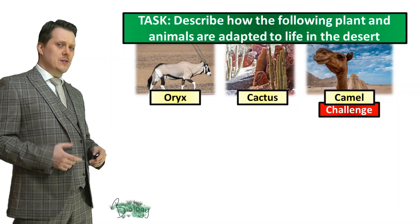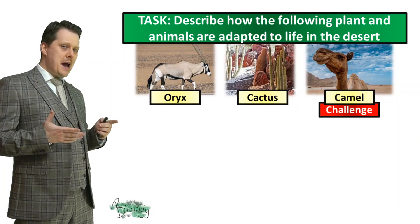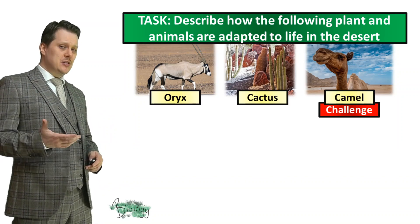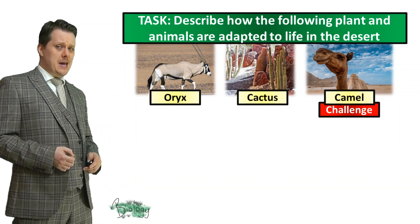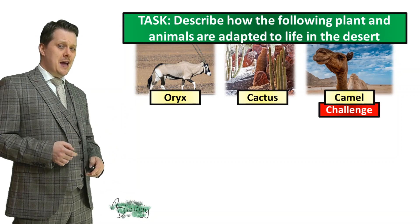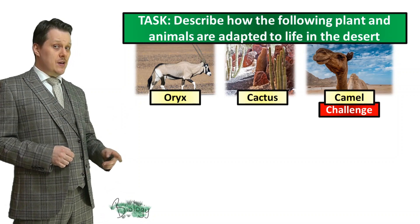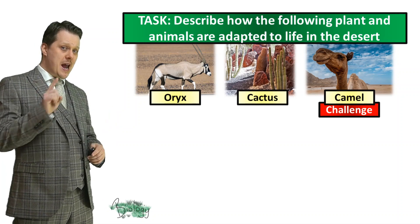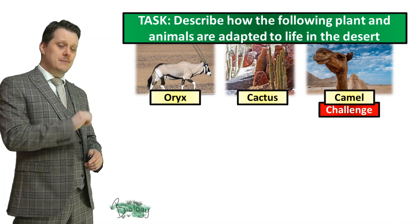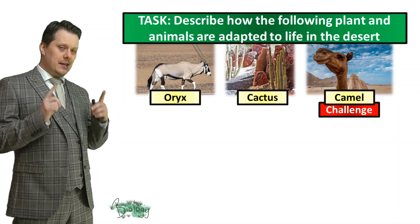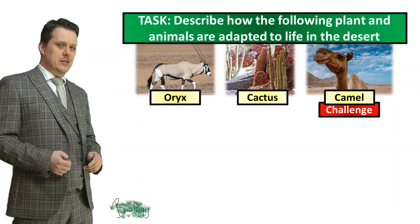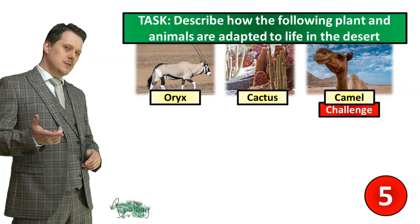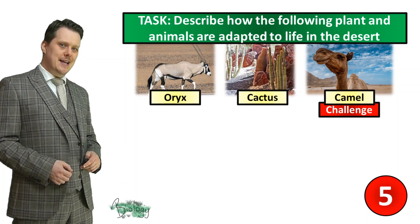Now let's have a go at describing how the following plants and animals are adapted to life in the desert. At this point we should all be able to do the oryx and cactus. And if you really want a challenge, you can have a go at the camel. Feel free to set this out as a table with three headings, with each plant or animal as one of those headings, and list the adaptations under each one. I'm going to put five seconds on the clock — if you need more time, pause the video, and when you're finished we'll go through the answers together.